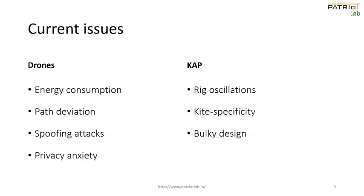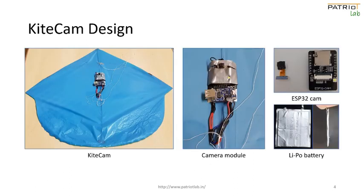Both equipments have their own advantages but also their own issues. Drones suffer from high energy consumption, which limits their flight time and payload capacity. They also raise privacy and security concerns such as spoofing attacks and intentional crashing. Present KAP structures are better than drones in terms of energy consumption and security, but suffer from oscillations of the rig during flight and require a bulky kite to carry the camera system. To resolve these issues, we present our approach named KiteCAM.